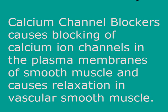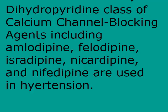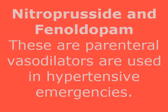Calcium channel blockers block calcium ion channels in the plasma membranes of smooth muscle, causing relaxation of vascular smooth muscle and vasodilation. They have a greater effect on arteriolar smooth muscle than venous smooth muscle, primarily reducing blood pressure through a reduction in PVR. Diltiazem and verapamil also have significant effects on cardiac tissue and can reduce heart rate and cardiac output. Most calcium channel blocking agents — including amlodipine, felodipine, isradipine, nicardipine, and nifedipine — belong to the dihydropyridine class and are among the most widely recommended drugs for initial treatment of hypertension.